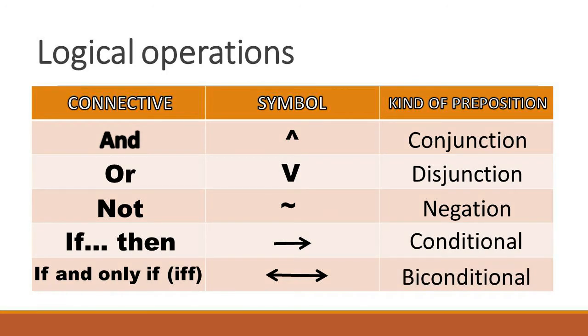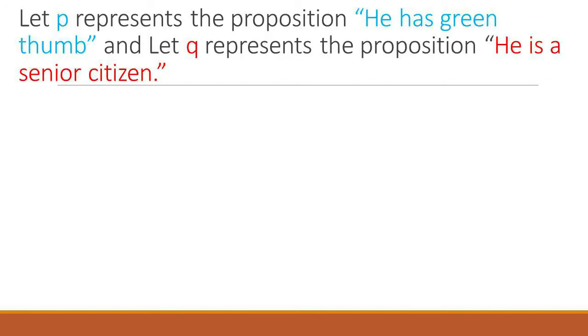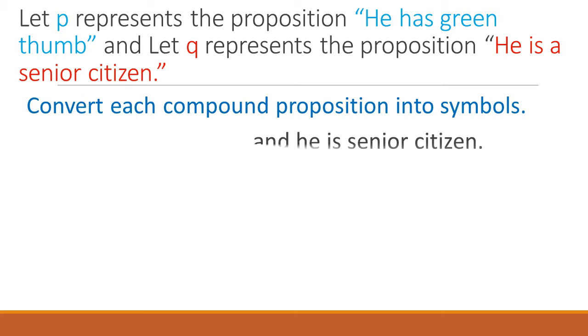Let's have some examples. Let P represent the proposition 'he has green thumb' and Q represent the proposition 'he is a senior citizen.' Let us convert each compound proposition into symbols.